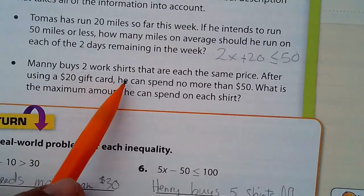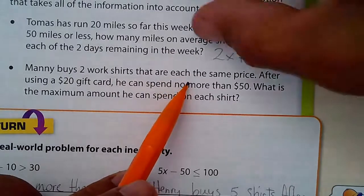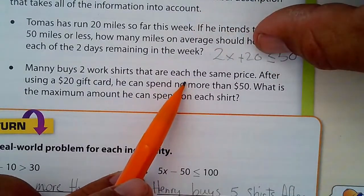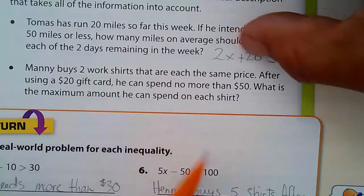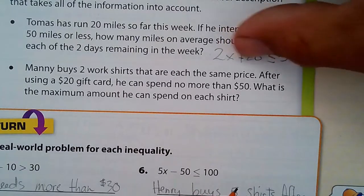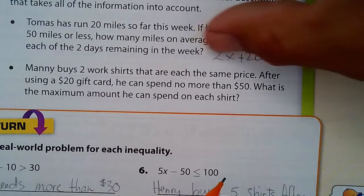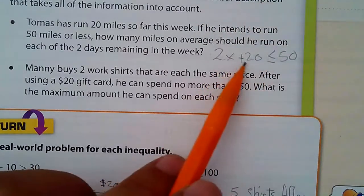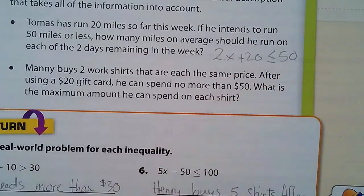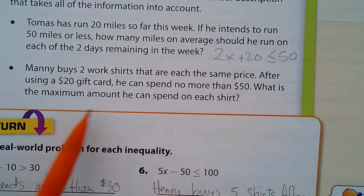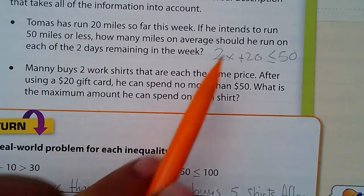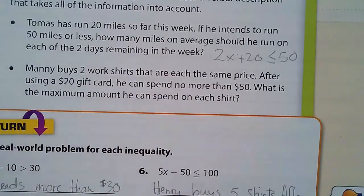Manny buys two work shirts that are each the same price. So there's the 2x. After using a $20 gift card. So again, it's another situation for this inequality here. He can spend no more than $50. So what he spends has to be less than or could be equal to his $50. What is the maximum amount he can spend on each shirt? So this matches this.